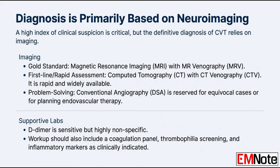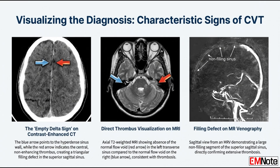If we suspect CVT, we need rapid confirmation. The gold standard is MRI coupled with MR venography — MRI with MRV. We're looking for direct signs of the thrombus: the loss of the normal flow void, which is usually present in patent vessels, direct visualization of the clot, and restriction on diffusion-weighted imaging, or DWI.